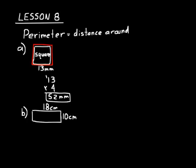Look at this rectangle for practice problem B. It is 18 centimeters long and 10 centimeters wide. Remember, perimeter means distance around. A rectangle has two pairs of sides that are the same length, so the opposite side must also be 18 and the other side must be 10. We could add the two 18s together to get 36, and add the two 10s together to get 20.